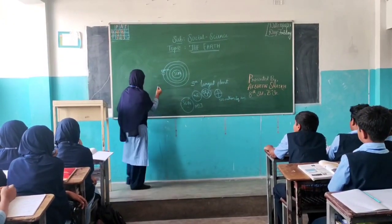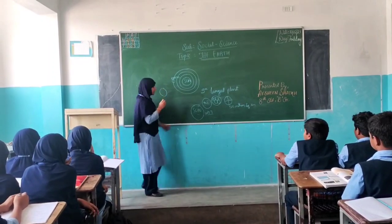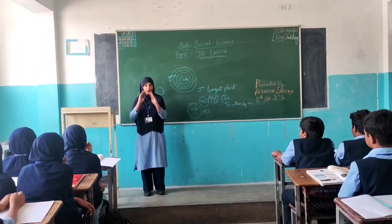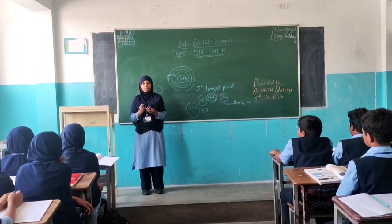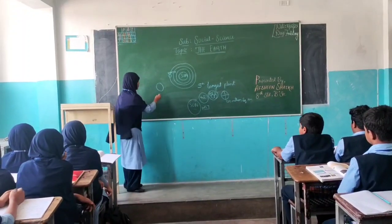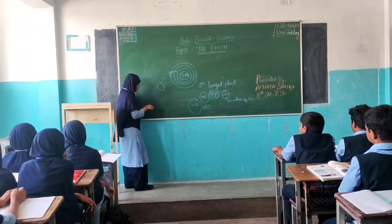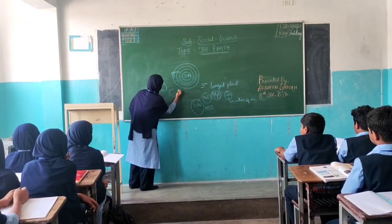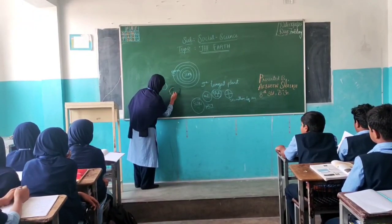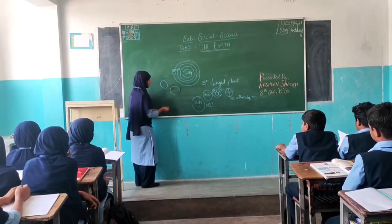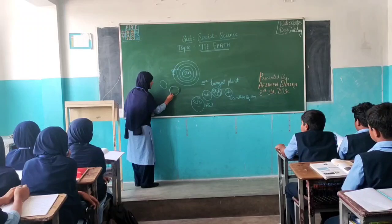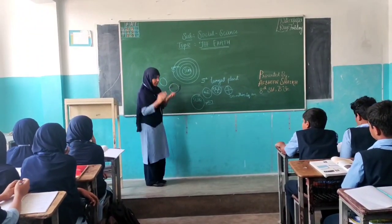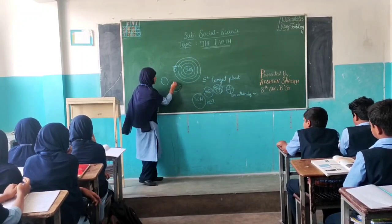As we all know, we consider the Earth as spherical in shape — like a ball, a complete circle. But it is not. Its actual shape is different. The Earth is not completely circular. It is flattened — flattened from the poles.